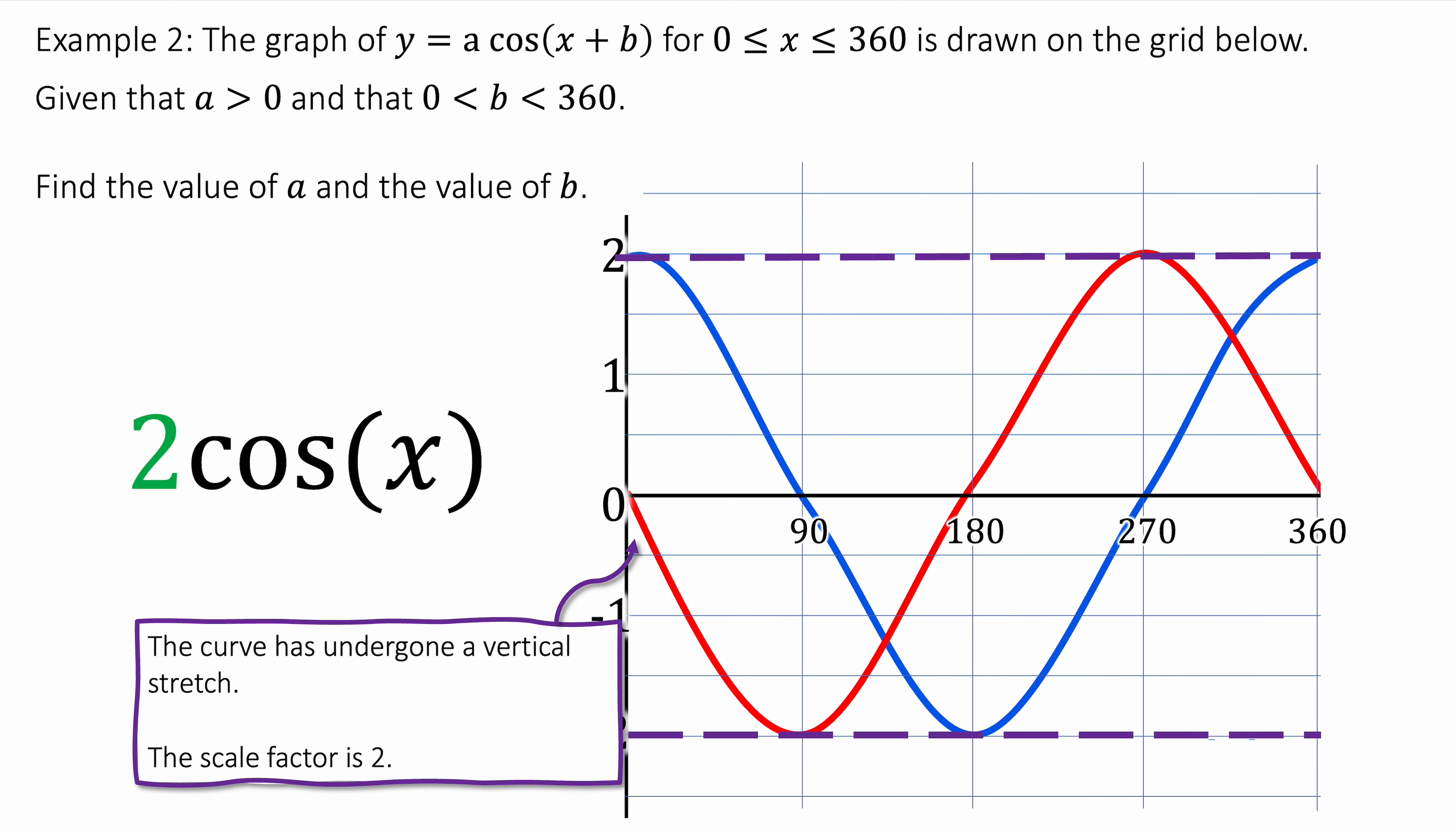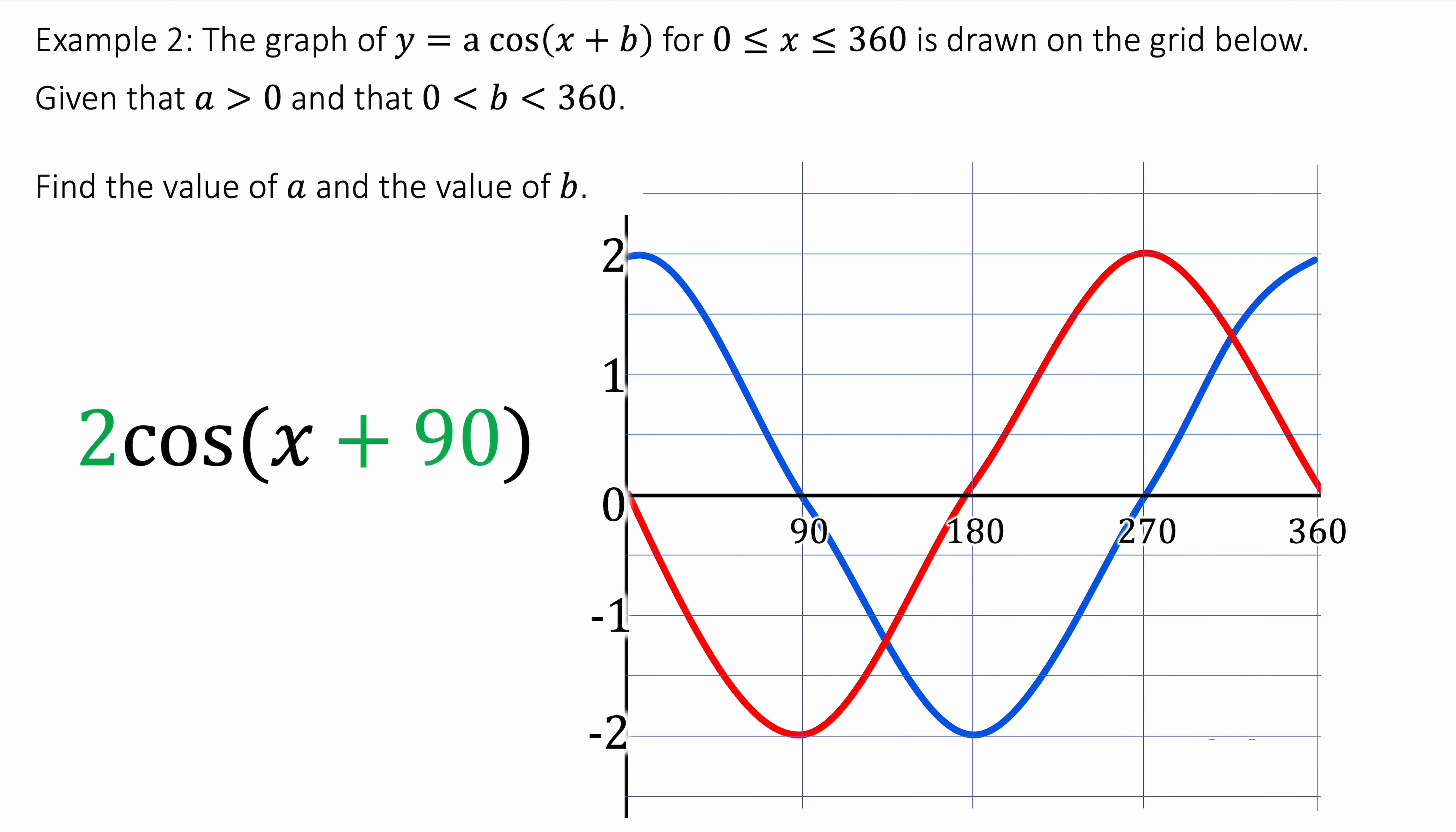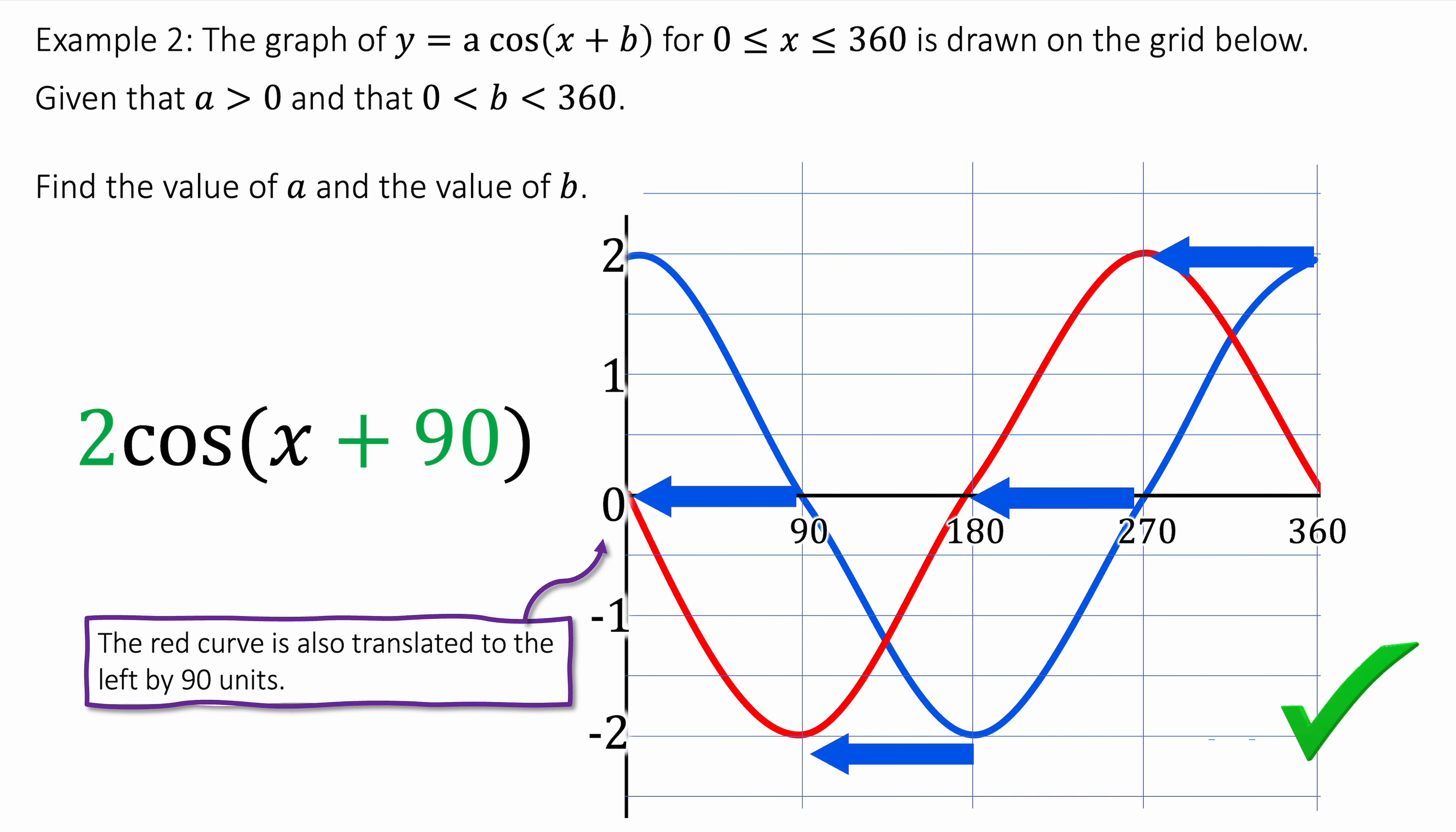And so I'm multiplying this by 2. And then I'm going to shift everything over by 90 degrees. Because the blue line is like the red line but shifted over by 90 degrees. So I'm going to add 90 inside the brackets to shift it to be more negative. And so the equation is 2 cos of x plus 90. And that is the equation of the red curve.